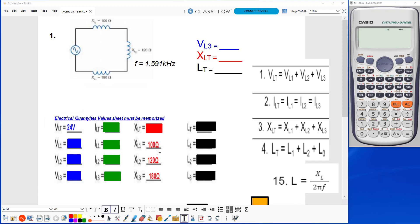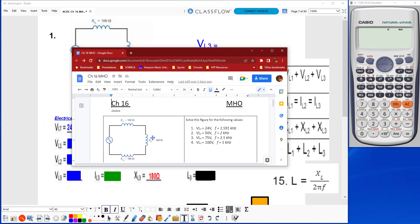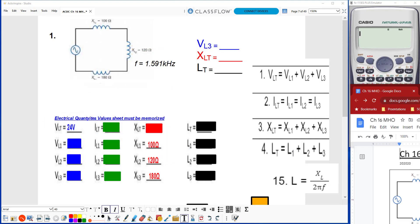We're getting our inductive reactance values, our XL values, from the circuit here. They're actually written on the circuit. And that's the only values you're given.